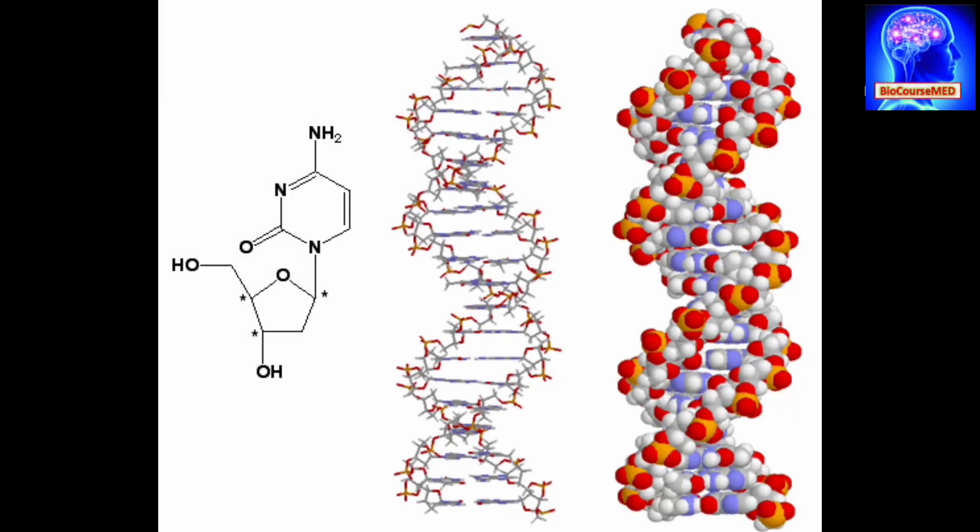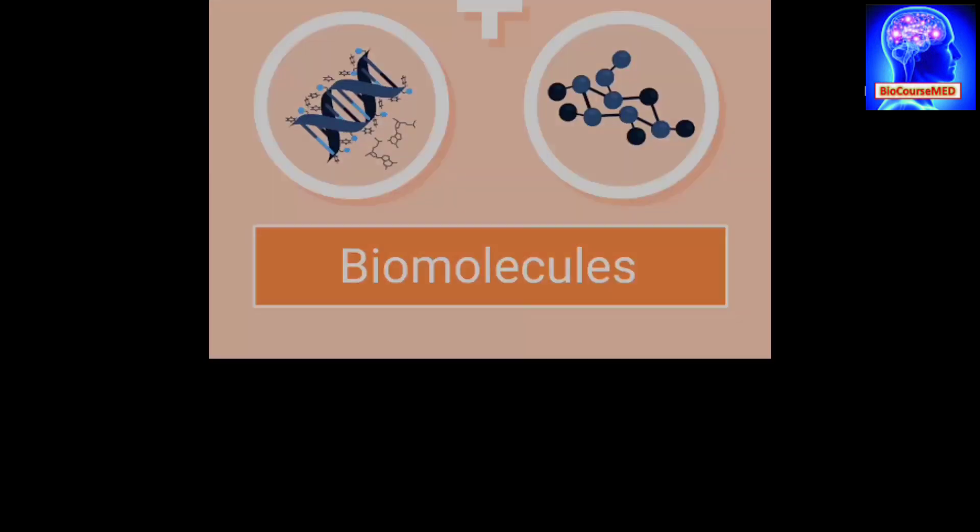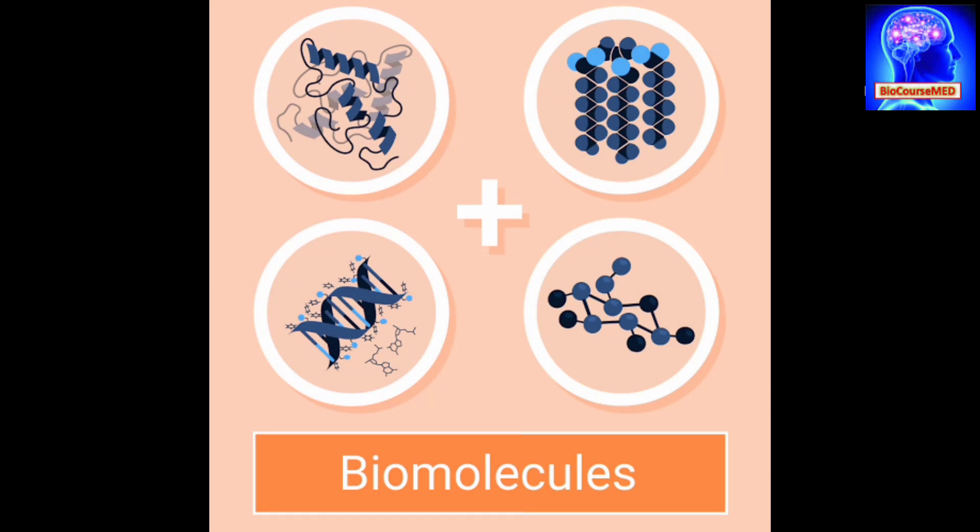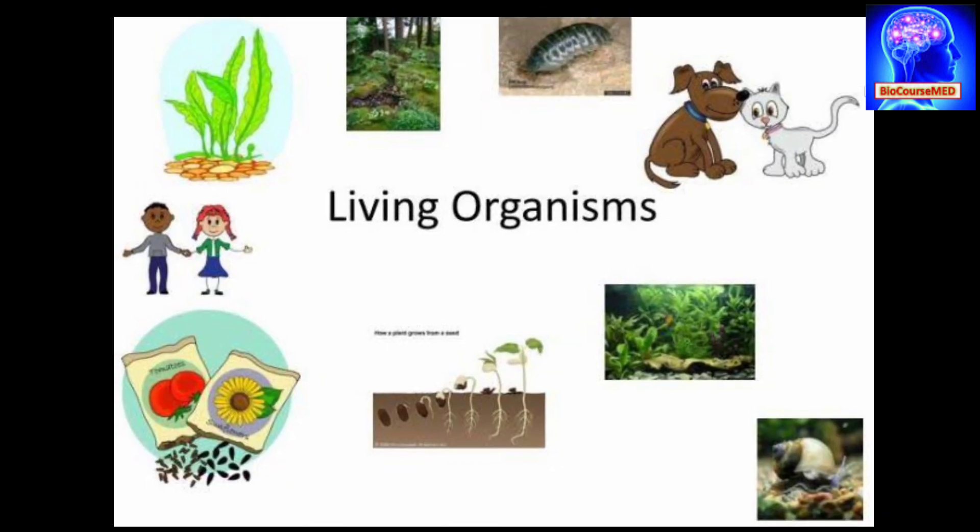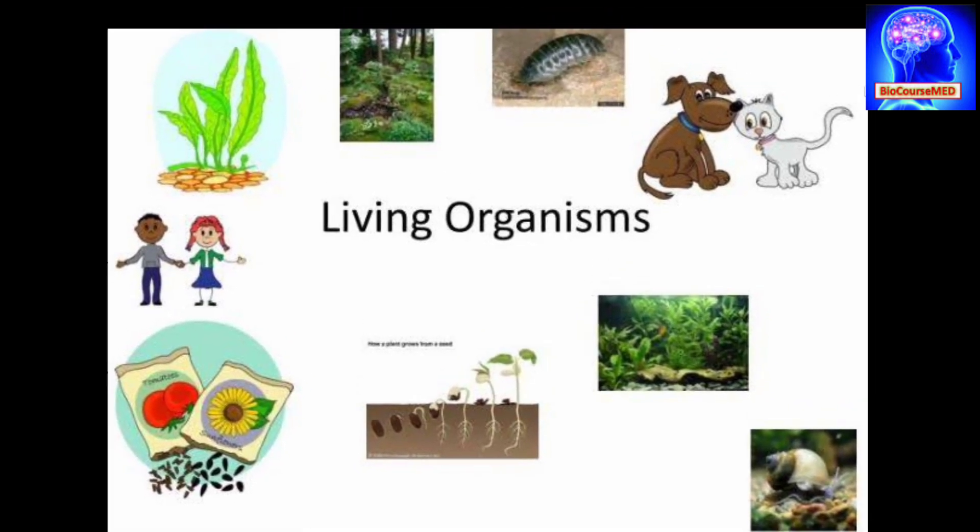Welcome back to my course. Today we are going to study about biomolecules and the different major types of biomolecules. A biomolecule is a chemical compound found in a living organism. These include chemicals that are composed of mainly carbon, hydrogen, oxygen, nitrogen, sulfur, and phosphorus.